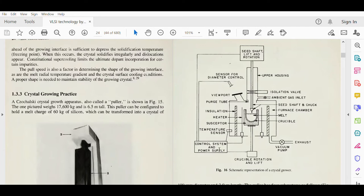This is the control system and power supply. Inside this figure you can see the melt where the silicon melt is, the crucible which holds the melt, the heater, susceptor, temperature sensor, insulation, purge tube, viewport,